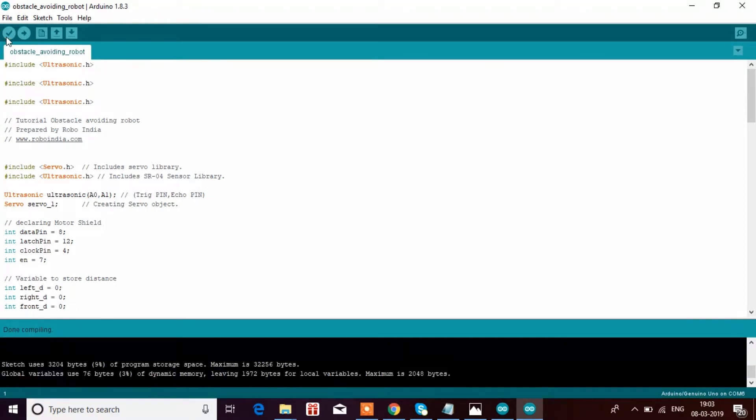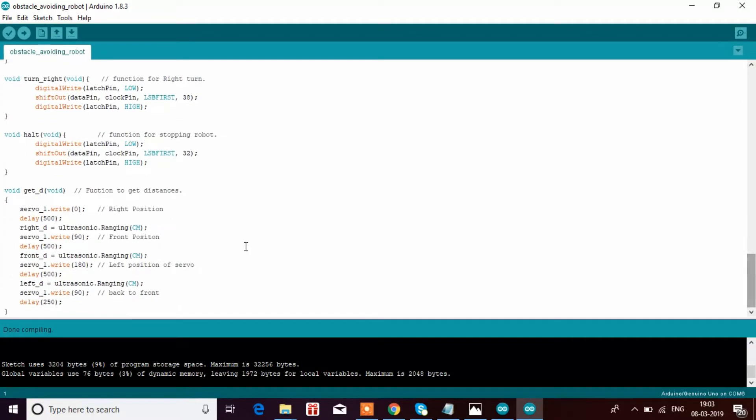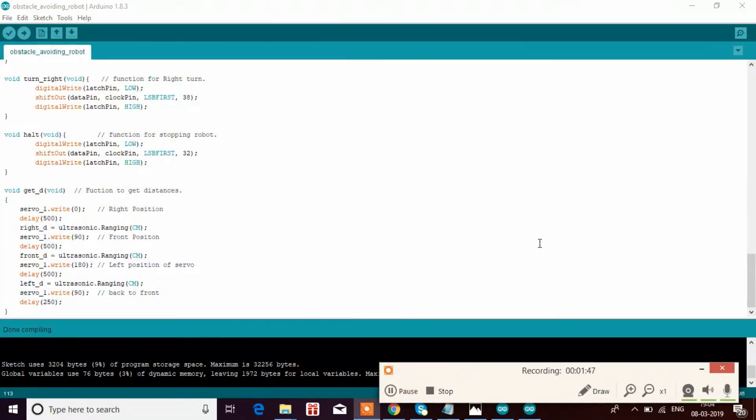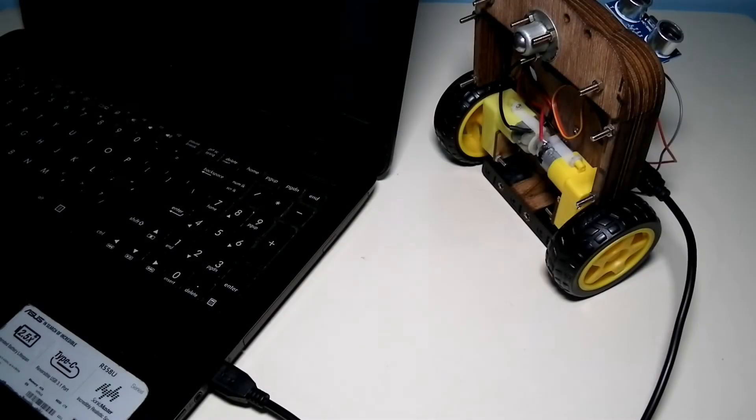So now I am just going to verify the code to see if it is correct. Now it doesn't show the error which was shown that ultrasonic.RANGING is not found. It was shown before, now it's not showing it. So now I am going to connect my Arduino to the laptop and upload the code. I am going to upload the code now, click on the upload button. It's compiling the sketch and then it's uploaded. And now you can see the ultrasonic sensor moving upwards.